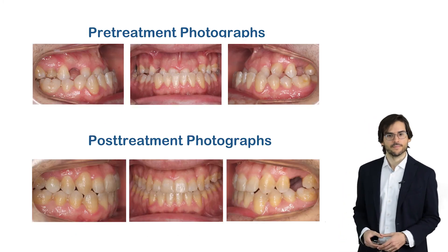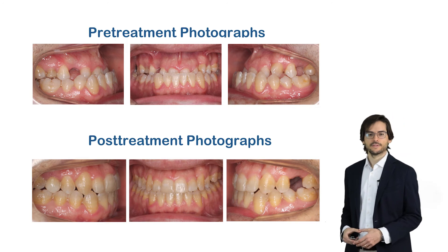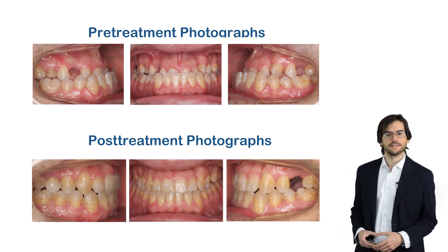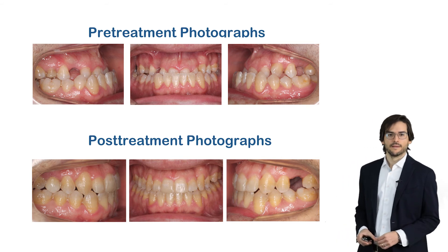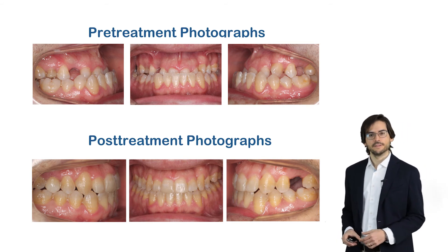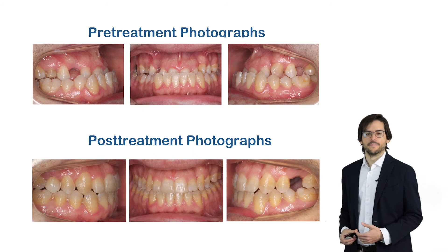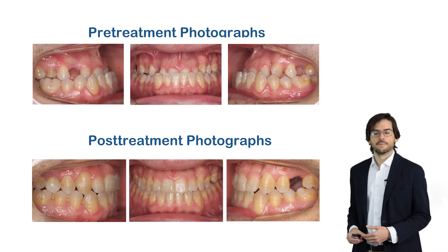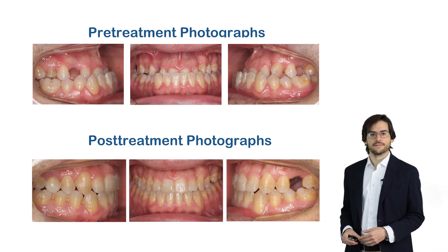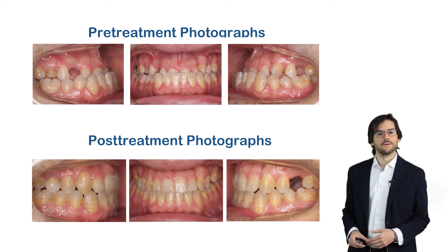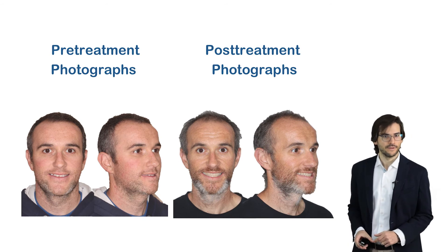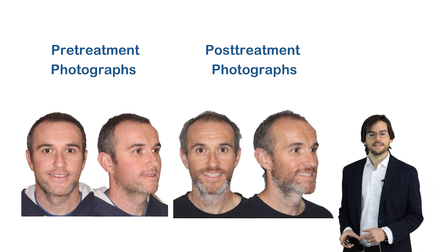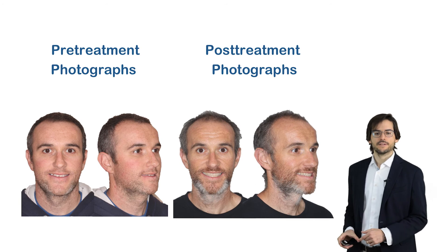Looking at the pre-treatment and post-treatment photographs, we can observe how the patient's malocclusion was treated in a reasonable treatment time. Class III elastics were avoided in order not to produce proclination of the upper incisors. The lower photographs show good interdigitation, and post-treatment facial photographs show a very nice smile and a harmonious facial profile.